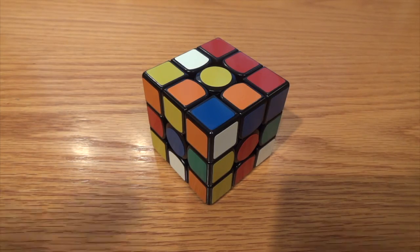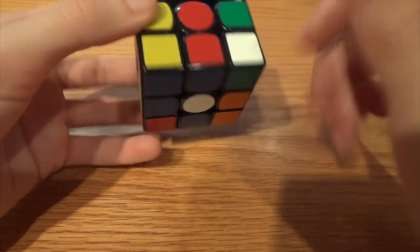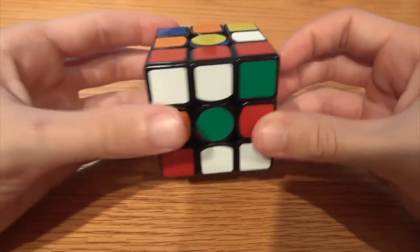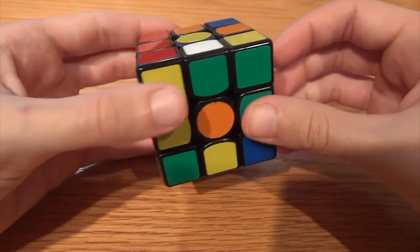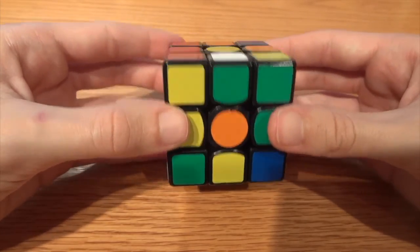For my cross I recognize three types of edges: solved edges, of which I have none, set edges which take one move to be solved, and floating edges which take more than one move to be solved.